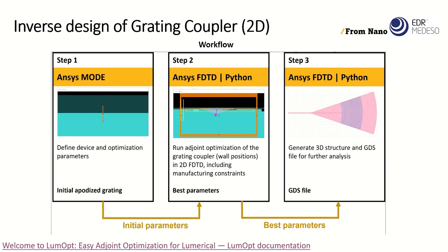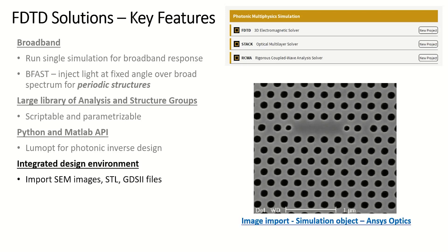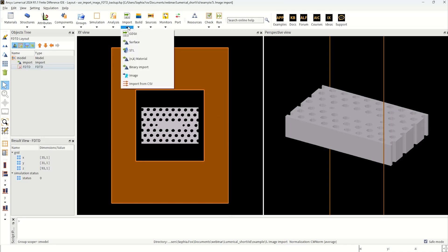You'll see in this workflow, in step three, you can export designs to GDS2 files. In fact, you can import and calibrate GDS2 CAD files and metrology data like SEM images. Here's an example of a SEM image of the photonic crystal cavity, and here it is imported and calibrated to be simulated in Lumerical. There are a list of other import objects available as well.